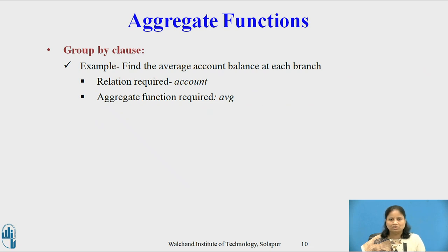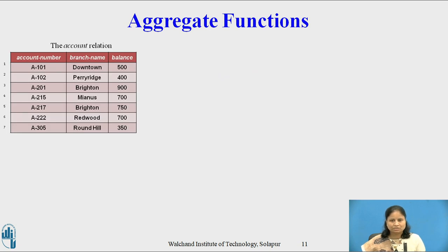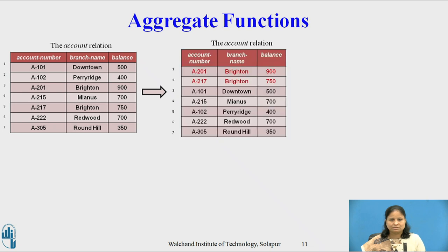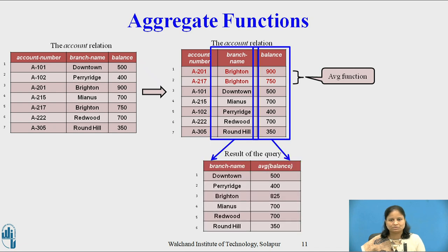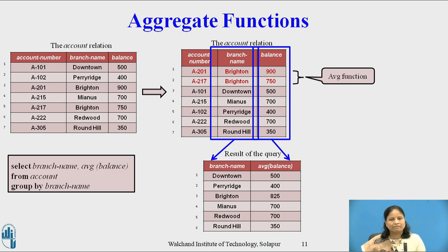Example of Group By clause: find the average account balance at each branch. The relation required is Account with fields Account Number, Branch Name, and Balance. We apply the aggregate function Average to the groups of branches. There are two tuples with branch name Braynton, so Average is applied to those two tuples. The result contains the average account balance at each branch as shown on the slide. The query is: SELECT branch_name, AVG(balance) FROM account GROUP BY branch_name.